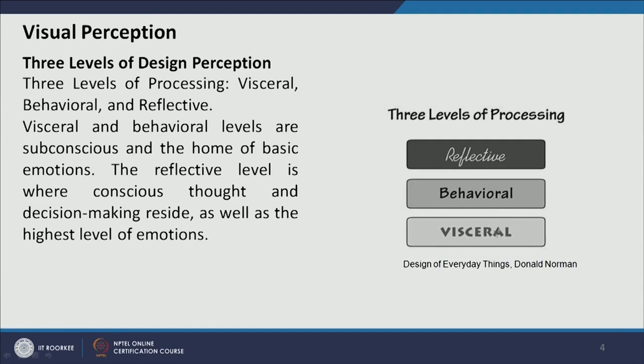Whenever we look at something, the first impression we get is the visceral level — without much mental stress or processing, we perceive something. After a certain level of mental processing we come to the behavioral experience of the visual or product. The reflective level is when we start thinking — it is more like connotative meaning, where perception, thinking, and reasoning are all involved.